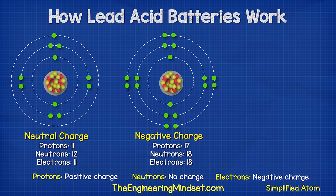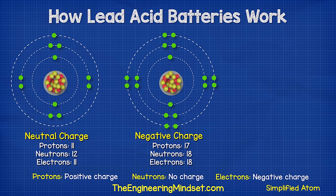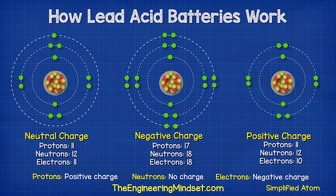If the atom has more electrons than protons then it's a negative ion. If the atom has more protons than electrons then it's a positive ion.